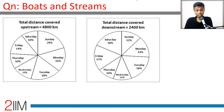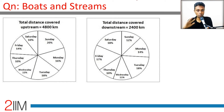Total distance covered downstream is 2400 kilometers. The boat has traveled more upstream than downstream overall — on some days it may go upstream and on others downstream, but overall it has traveled more upstream than downstream.